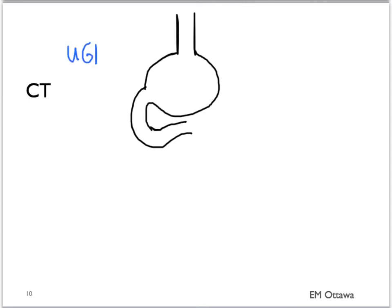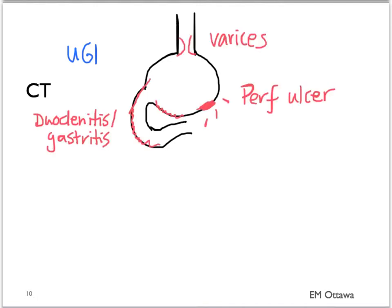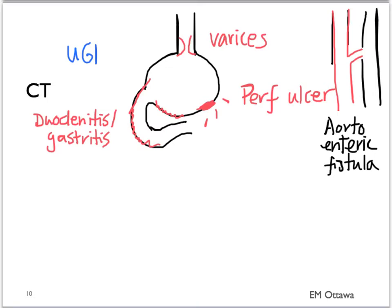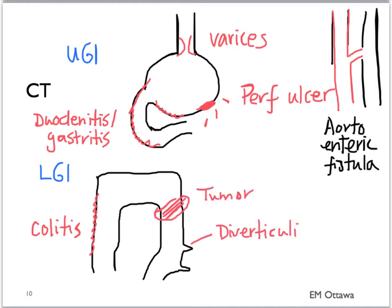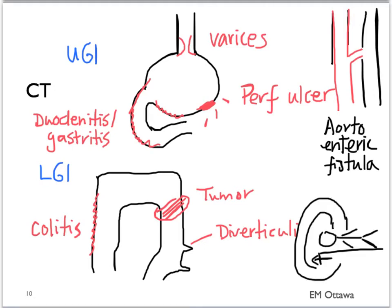Therefore we move on to CT. CT is quite helpful in diagnosing different conditions that can lead to upper and lower GI bleeds. For upper GI bleeds you can diagnose esophageal varices, perforated ulcers, and sometimes duodenitis and gastritis. You can certainly diagnose aortoenteric fistula. For lower GI bleeds, CT can diagnose colitis, tumor, and diverticuli. CT is unable to tell you whether anything is actively bleeding or not. Remember that for the patient to go through the CT scanner they need to be hemodynamically stable.